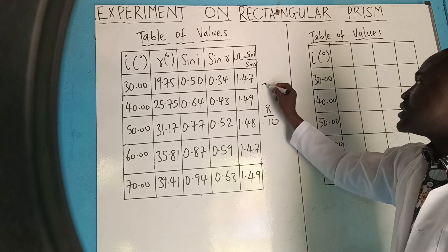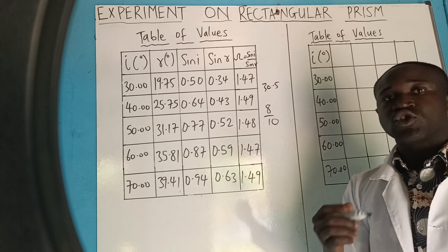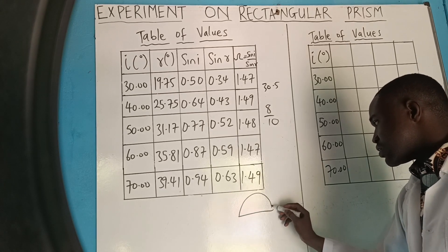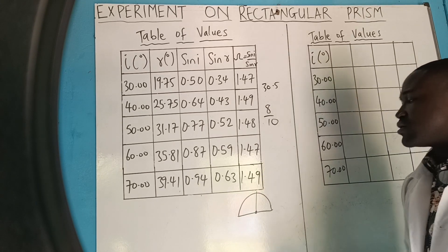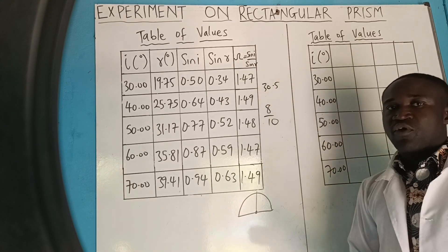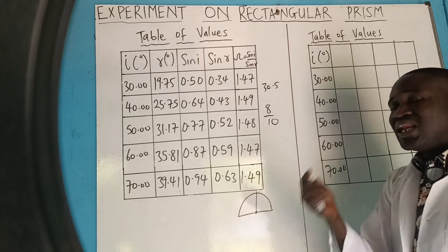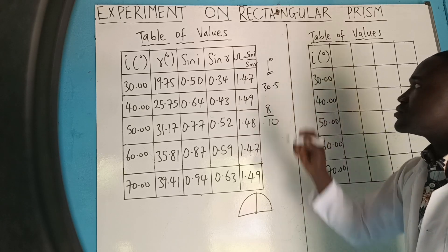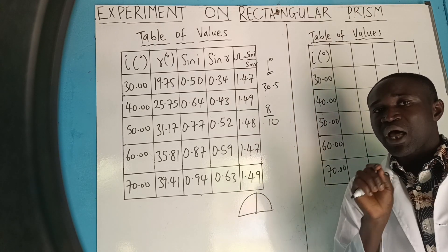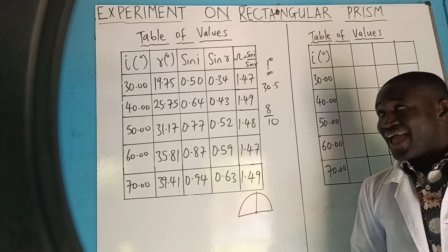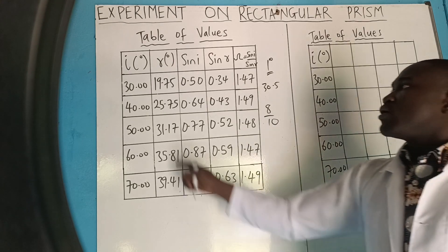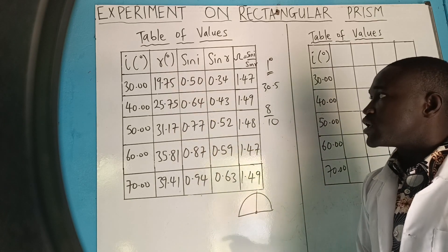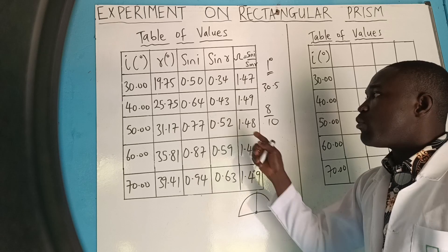But can you get, let's say, 30.5 with your protractor? Please, protractor is this one that looks like this. You will see it inside your math set. Check whether you can get 30.5 from it. You can't. Because the least value you can get from protractor is 1 degree. You cannot get decimal numbers from protractor. Are you getting it?